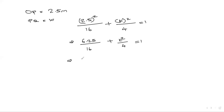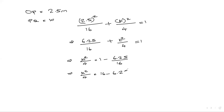So k² / 4 = 1 − 6.25/16 = (16 − 6.25) / 16. Simplifying: k² = (16 − 6.25) × 4 / 16.